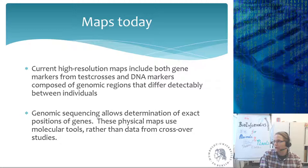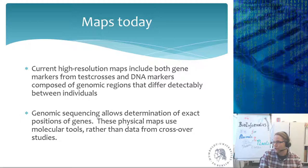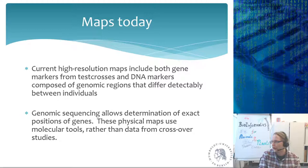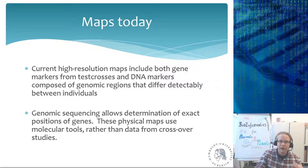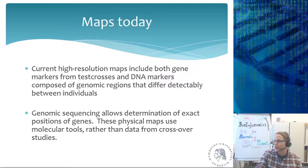Nowadays we can do whole genome sequencing and determine the exact position of a gene to a single base pair. These physical maps use molecular tools rather than crossover study data. However, many geneticists still like working with the original genetic map supplemented with phenotypic information, which can be used to validate that individuals weren't mixed up. If an individual should have red eyes but doesn't, you know something went wrong — something you can't easily detect with genomic sequencing alone.